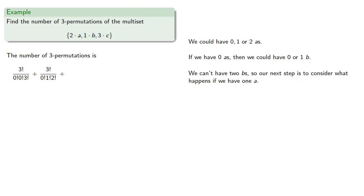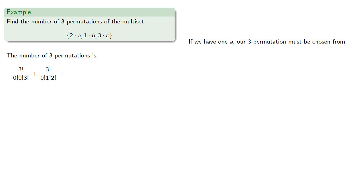If we have 1 a, then our 3 permutation must be chosen either from the multiset, or from the multiset, which gives us additional permutations.